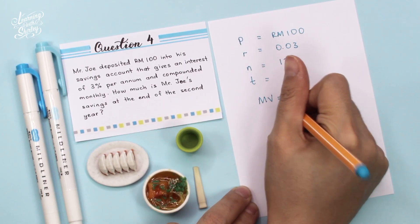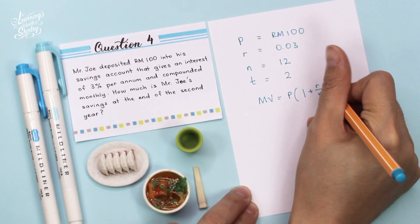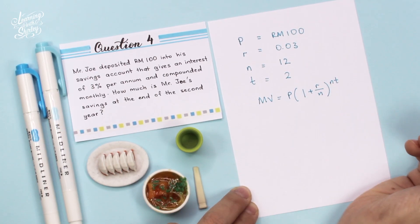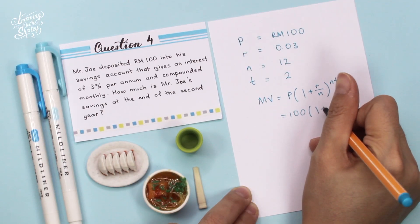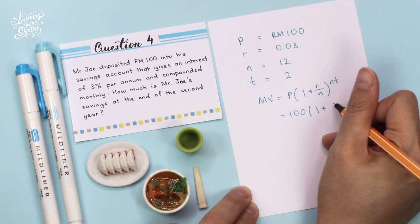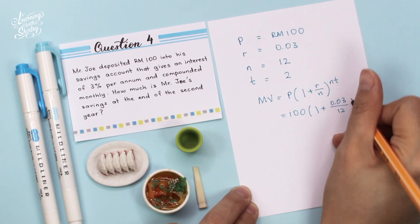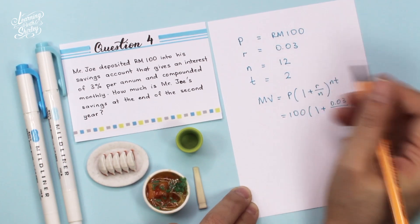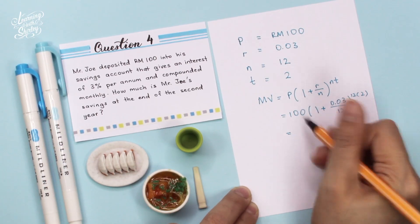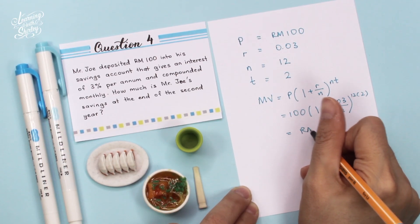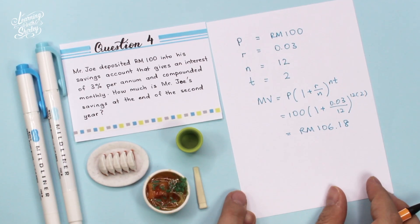We can substitute all these values into the formula, which is MV equals to P bracket 1 plus R over N, to the power of NT. P is 100, 1 plus R is 0.03, N is 12, and NT is 12 times 2. Use the calculator to calculate this and you will get RM106.18. That's the answer.